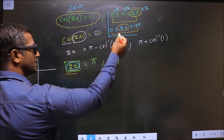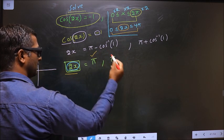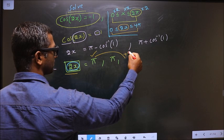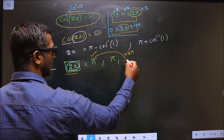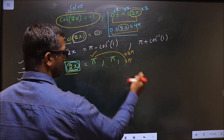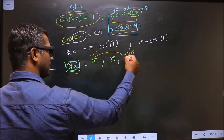Does π lie in this interval? Yes, accept it. To get another value, we should add 2π to this. When we add 2π, I get 3π. Does 3π lie in this interval? Yes, so accept.